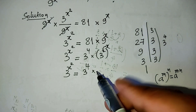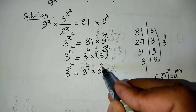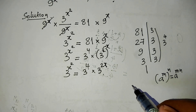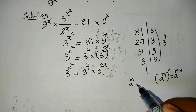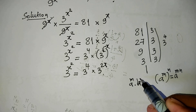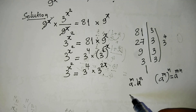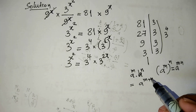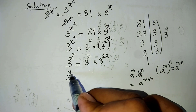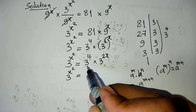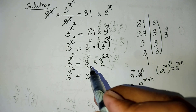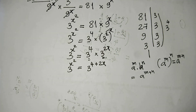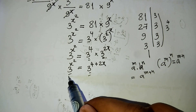Here is 2 times 8, we get 3 power 16. And now we use the formula a power m times a power n equals a power m plus n. So our equation 3 power x squared equals 3 power 4 plus 2x, since the base is the same 3.